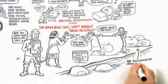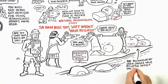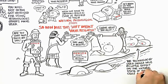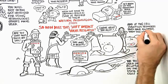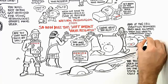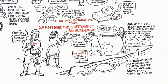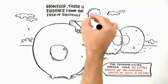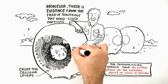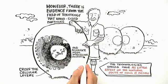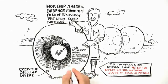So how does this shift impact your research? The technologies you use should have as little effect on the natural state of the cells as possible. And if the cell isolation technology does have an effect, then you need to understand what that effect is. However, there is evidence from the field of toxicology that nano-sized particles cross cellular layers and actually accumulate inside intracellular compartments rather than being easily biodegraded.